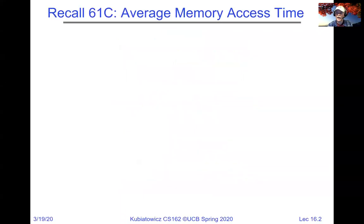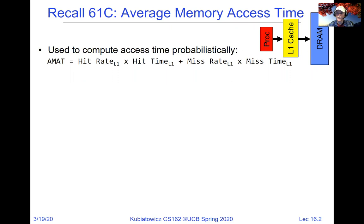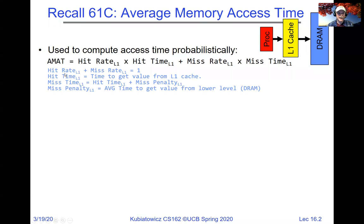One thing I wanted to remind you: we've been talking a lot about caching, and pretty much everything in operating systems is a cache. One way to compute the effectiveness of caches is to compute the average memory access time. The average memory access time is hit rate times hit time plus miss rate times miss time, and of course the hit rate plus the miss rate equals one — that's just a probability statement.